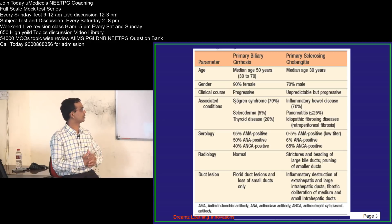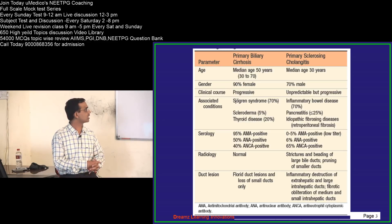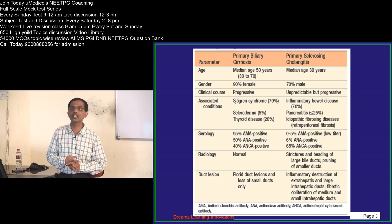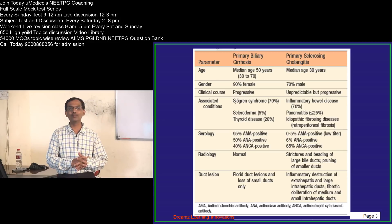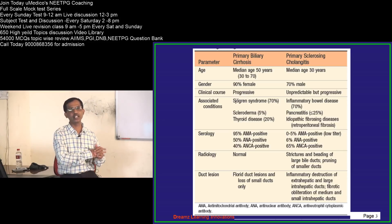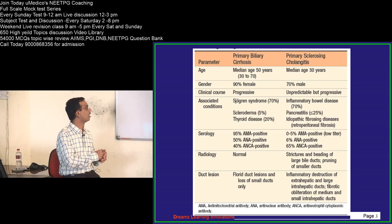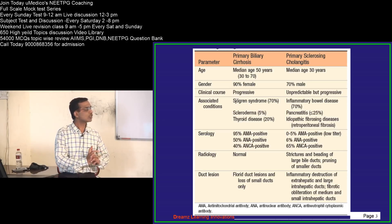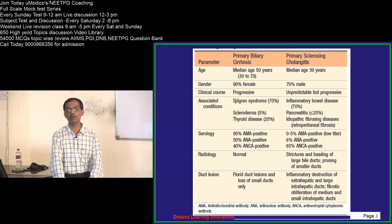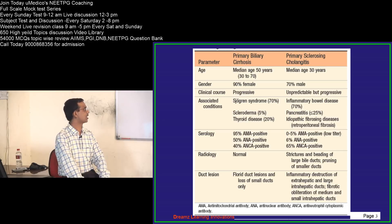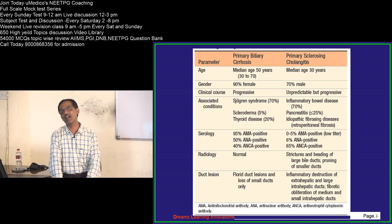PSC patients can also have pancreatitis and idiopathic retroperitoneal fibrosis, also called Rothmund disease. Regarding serology: 95% of PBC patients have antimitochondrial antibodies — a very specific antibody, highly specific in 95% of cases. Only 50% have antinuclear antibodies, so ANA may or may not be present in PBC — it is not sensitive for PBC.